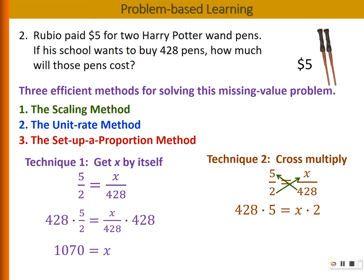Now, again, in order to solve for x, I need to divide both sides by 2. So as a result, my x equals 428 times 5 over 2, and that equals 1070.